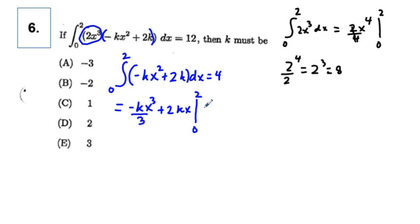Substituting in, we have negative kx to the third power over 3 plus 2k, and we have 2 is equal to 4. We don't have to substitute in anything else because a 0 will zero all these other things out, so we can just simplify from what we have.